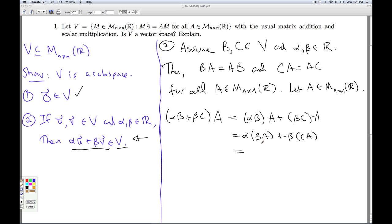Now use the fact that both B and C are in V. That means I can reverse the order of multiplication here. And now I'm going to use properties of scalar multiplication to move the scalars in to where I want them to be. And now use the distributive property once again and quote-unquote factor out the A.